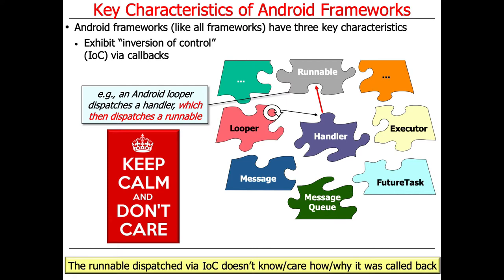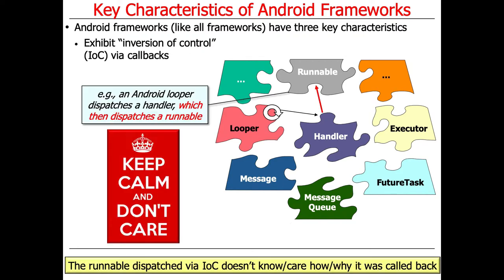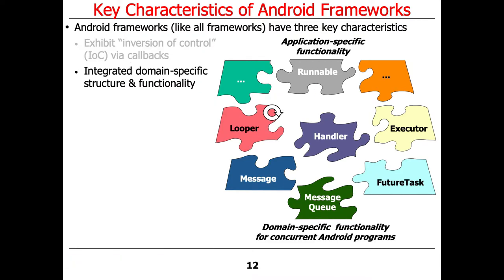What's cool about this is that the runnable dispatched by the inversion of control mechanism supported by the Android framework doesn't know and doesn't care how or why it was called back. All it knows is: it was my time to run, I'm in the right context — run — because run is the hook method that gets called back for a runnable. So that's the first thing: inversion of control using callbacks.